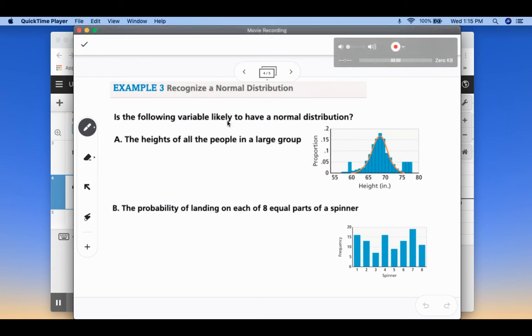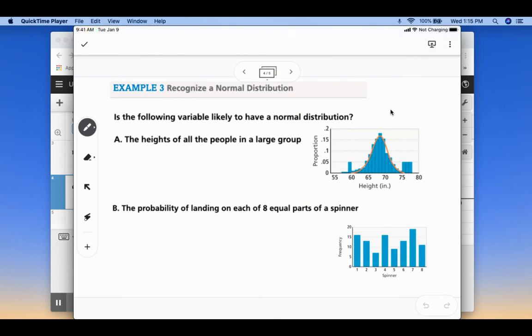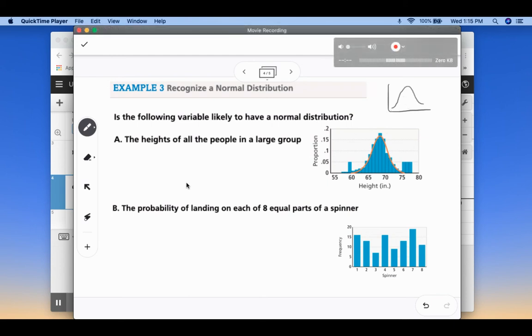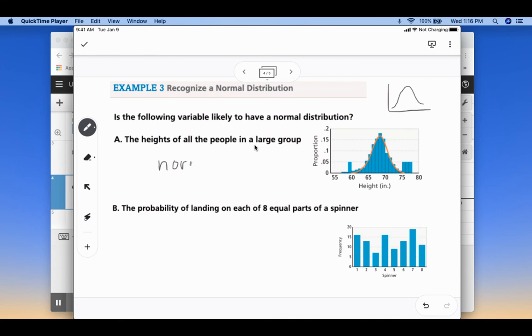So example three is, is the following likely to have a normal distribution? So a normal distribution, a normal curve, also called a bell curve, is basically like what we were just talking about. It's a symmetric graph. So we're going to look at four examples here and determine whether or not they would have a normal distribution. The heights of all people in a large group. So heights, you can see there are some outliers where we have several people that were really tall or really short compared to the average. But in general, this would be a normal distribution.